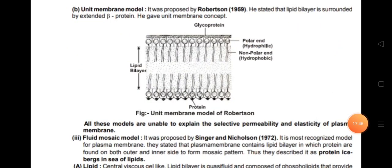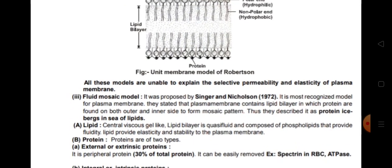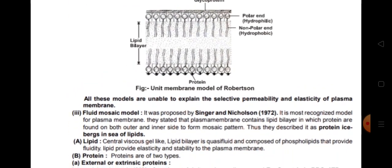The unit membrane model was proposed by Robertson. He stated that the lipid bilayer — two layers of lipids — is surrounded by extended beta protein, and gave the term 'unit membrane.' In the diagram, glycoprotein is present outside and a protein layer is on the inner side also, with the lipid bilayer in between — polar heads facing outside and non-polar ends towards the inner side. All these models are unable to explain the selective permeability and elasticity of the plasma membrane.